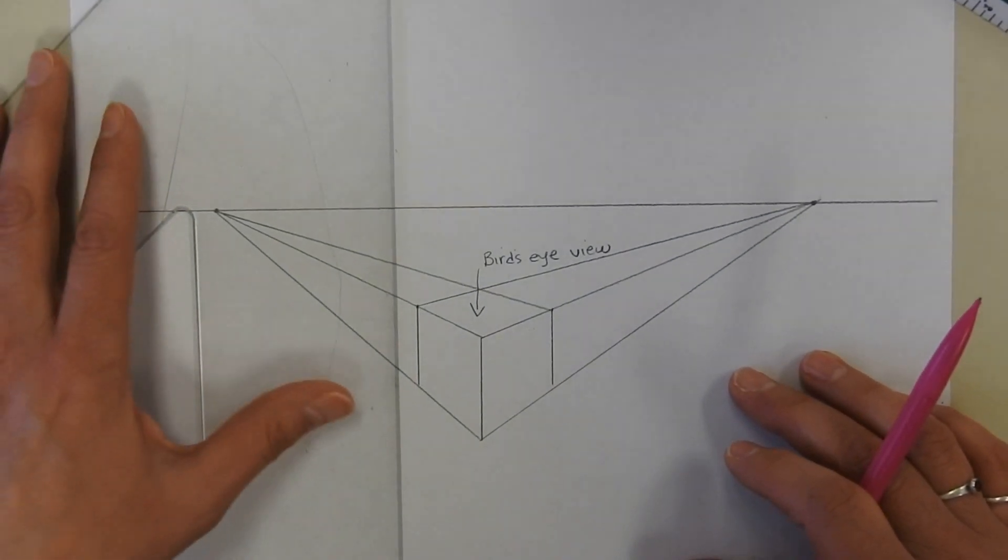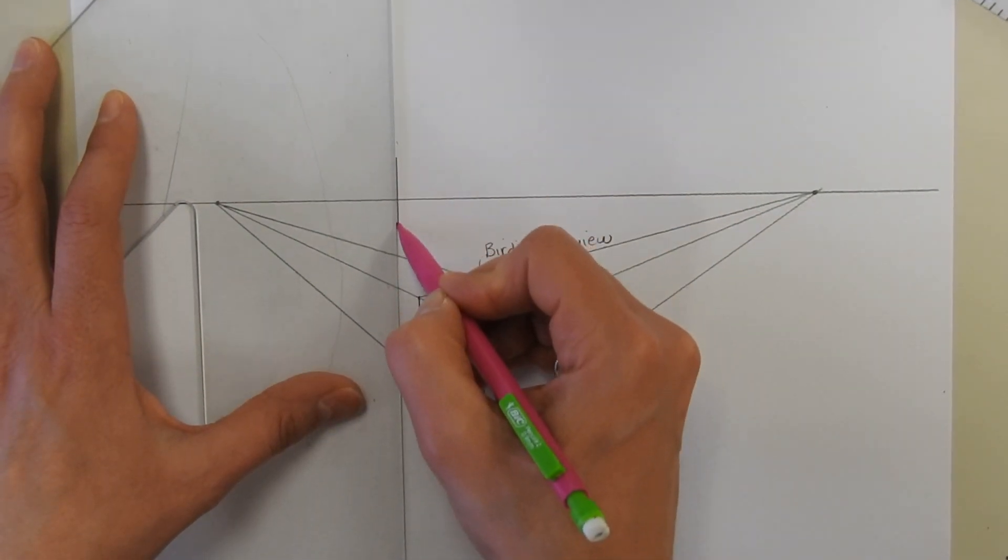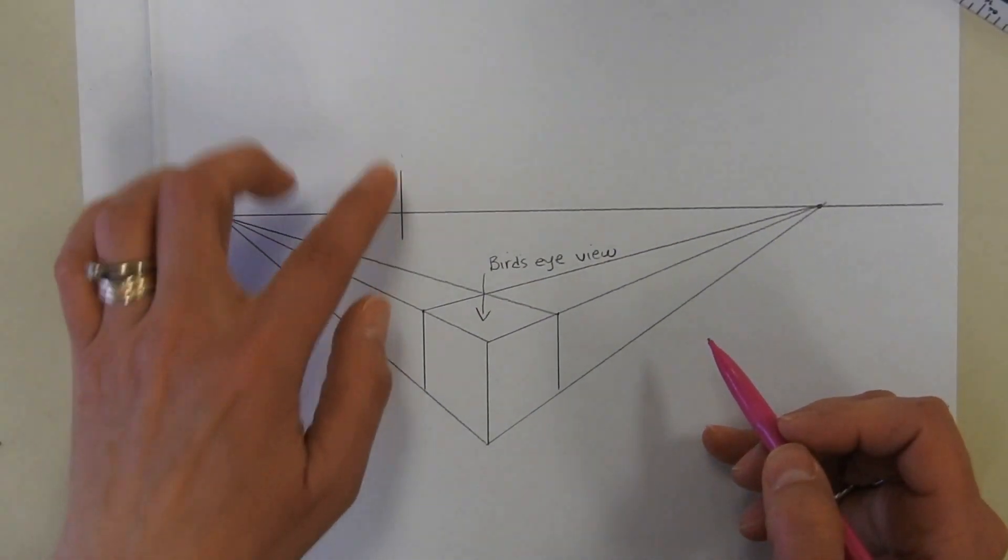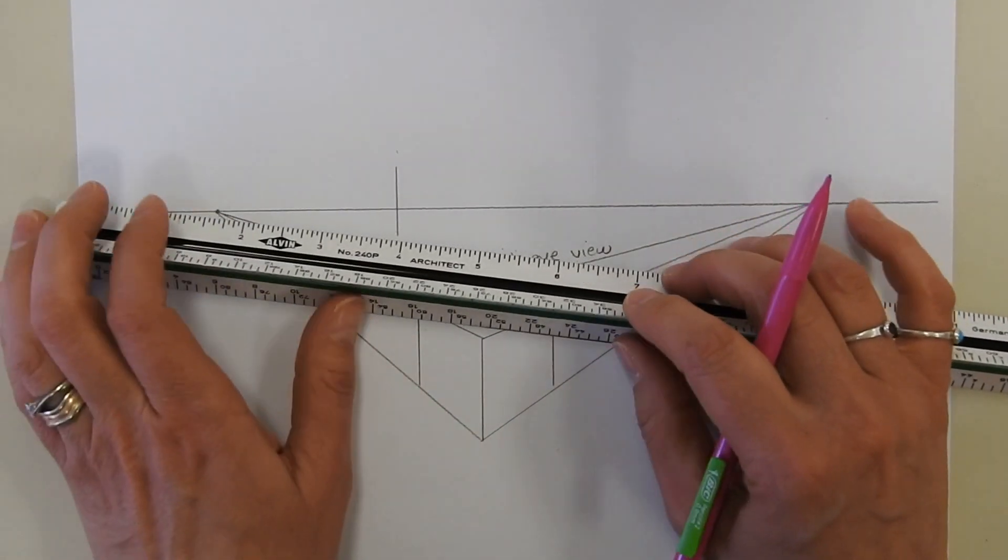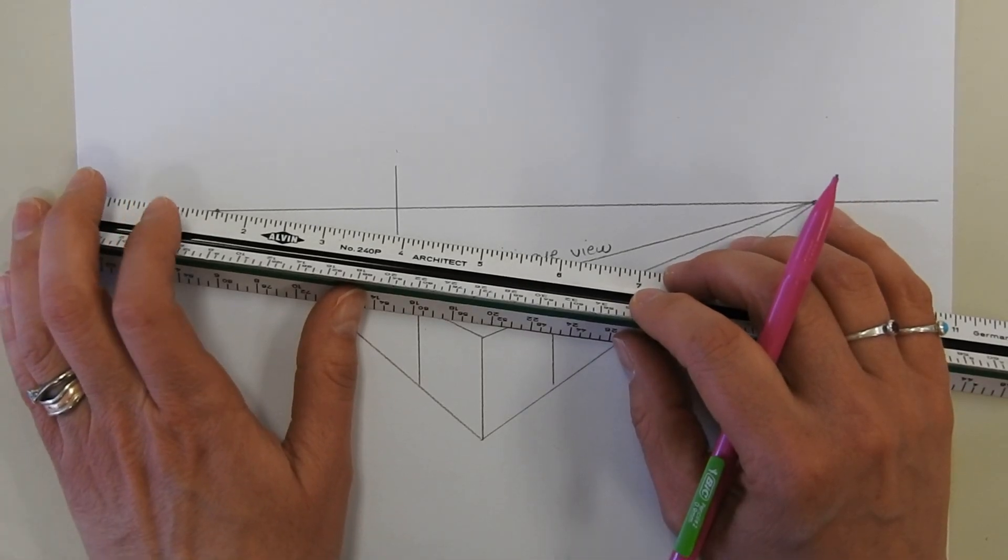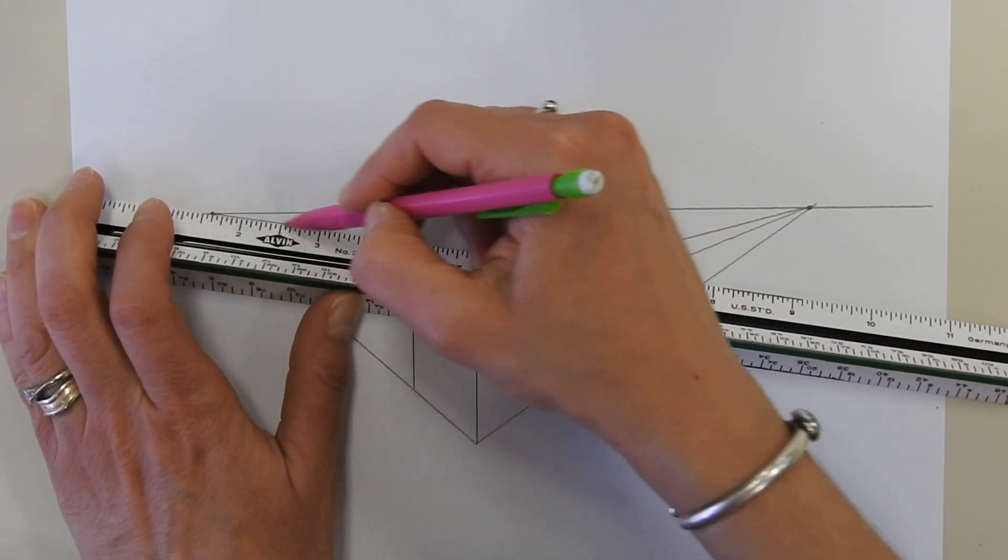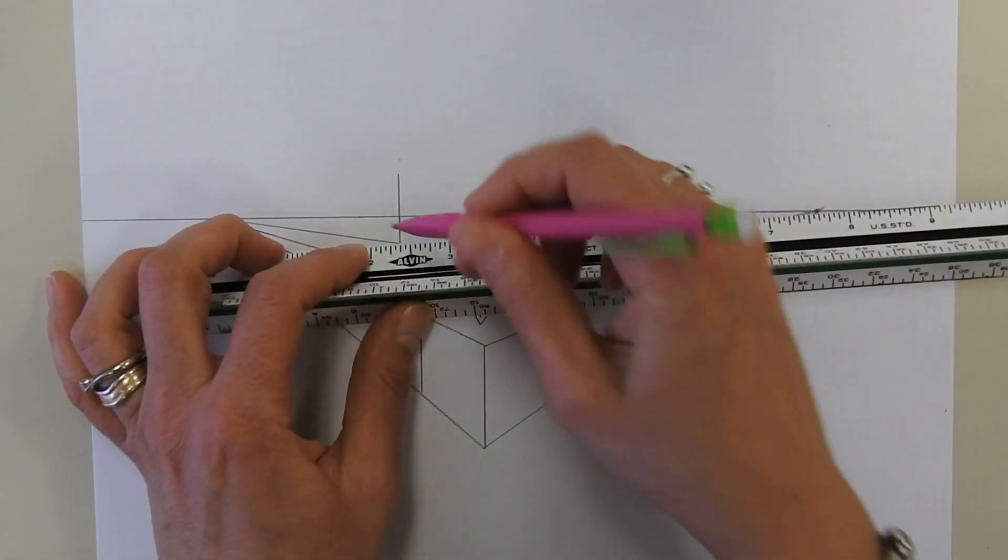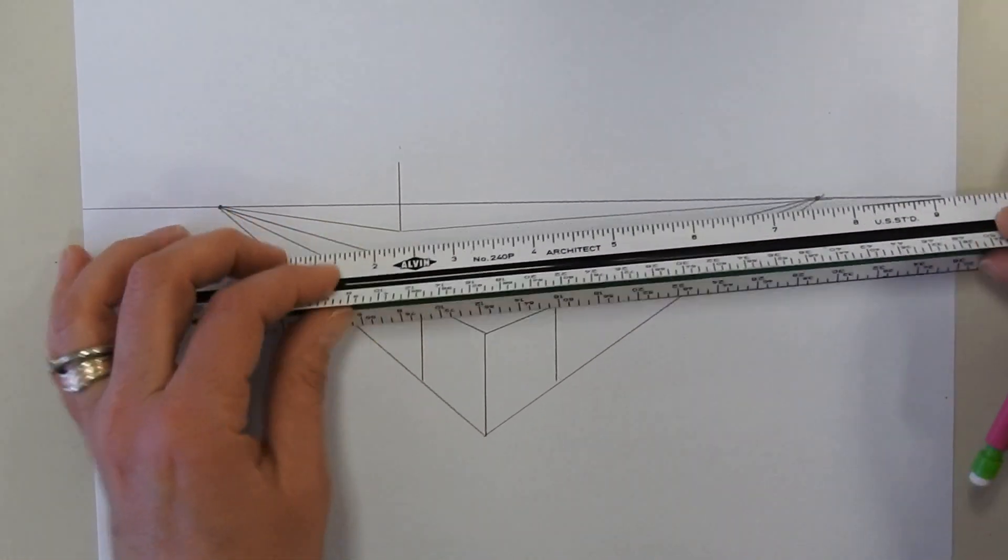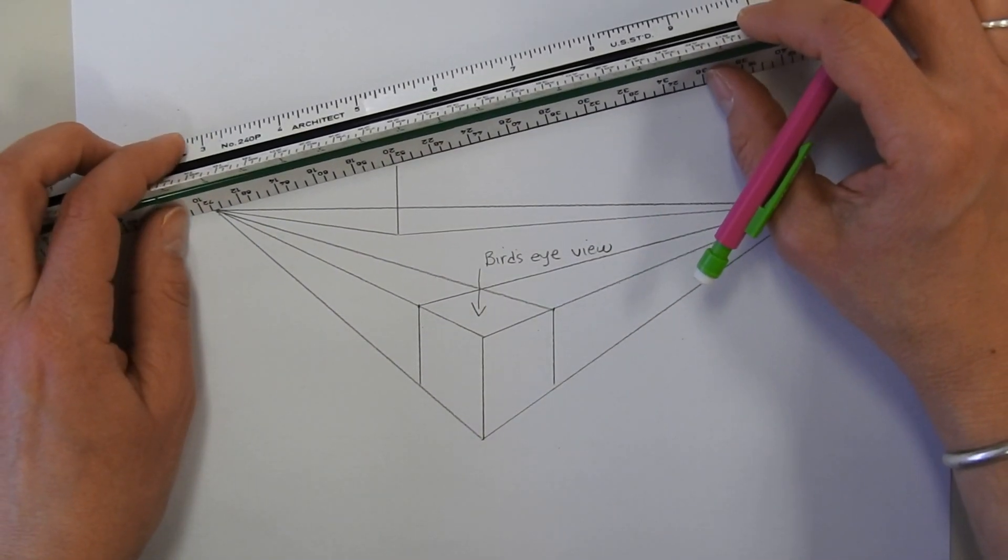Now if you're going to do one on the horizon line, let's put one right here. Okay, it's going to look a little different. You'll have your leading edge, then you're going to take those same lines to the vanishing point like this, below and at the top.